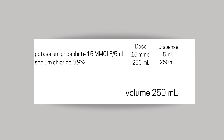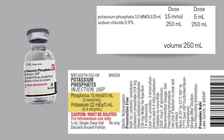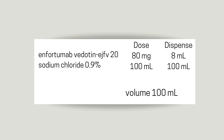Here's another one that's easy to calculate — potassium phosphate, 15 mmol per 5 mls. The dose is 15 mmol, dispense 5 mls, in a sodium chloride 250 ml bag, total volume 250. On our vial it has phosphorus 15 mmol per 5 mls, so the final concentration is 3 mmol per ml. You take your dose of 15 divided by 3, and that gives you 5 mls.